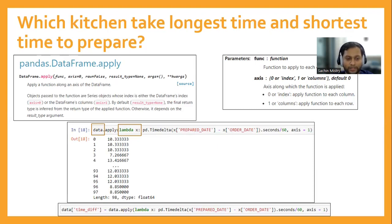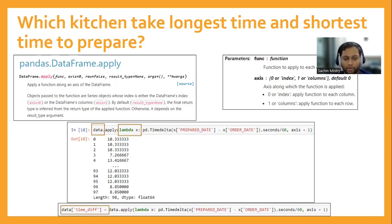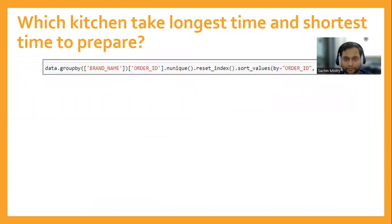We initialize a new column: 'data[time_diff]' equals this complete function. All values are calculated and stored into the new time_diff column in the data frame. Coming back to the question of which kitchen takes the longest and shortest time — we first calculated the time difference between prepare date and order date for each order and created a new column. Now we group by kitchen name to get the final values.